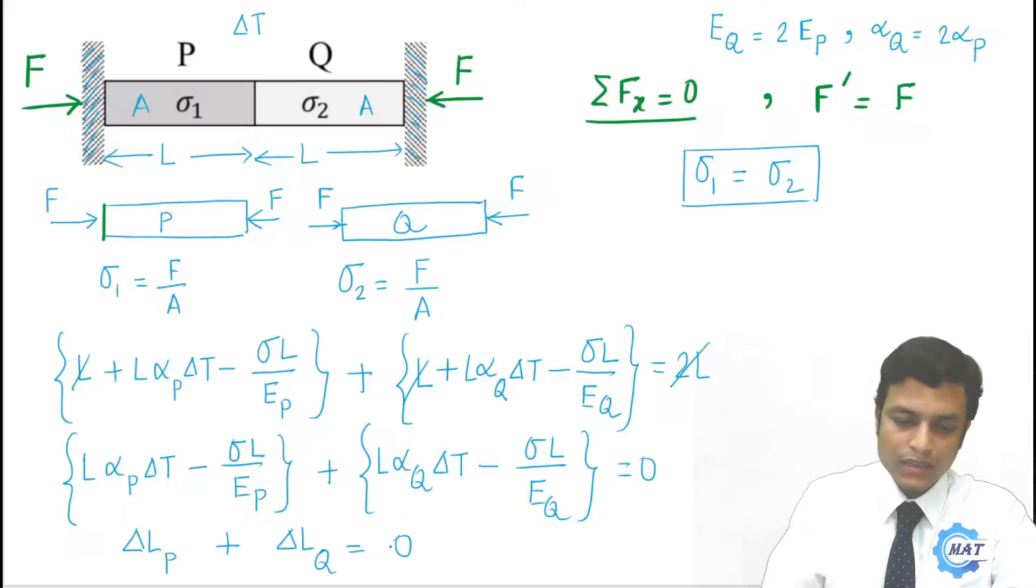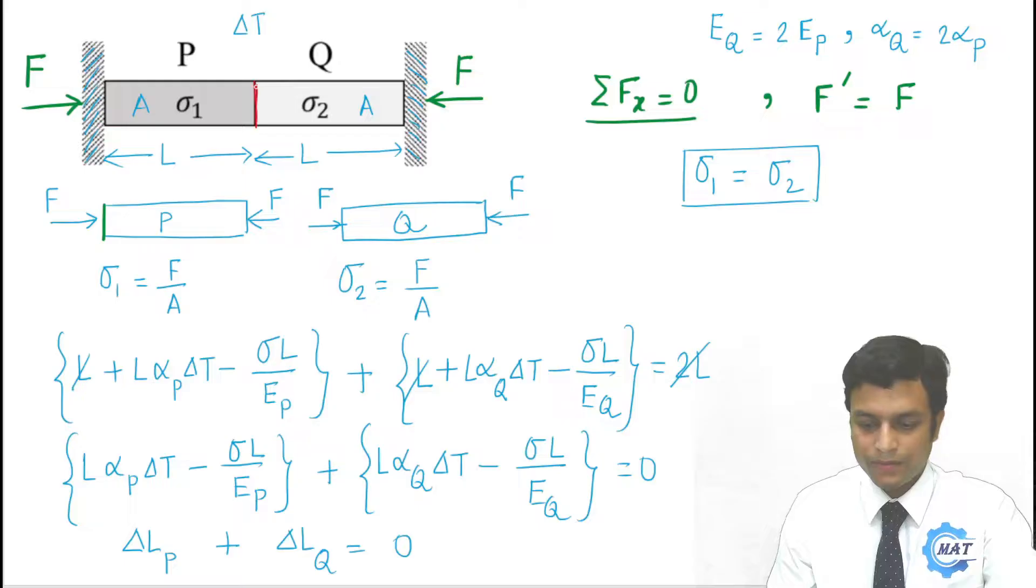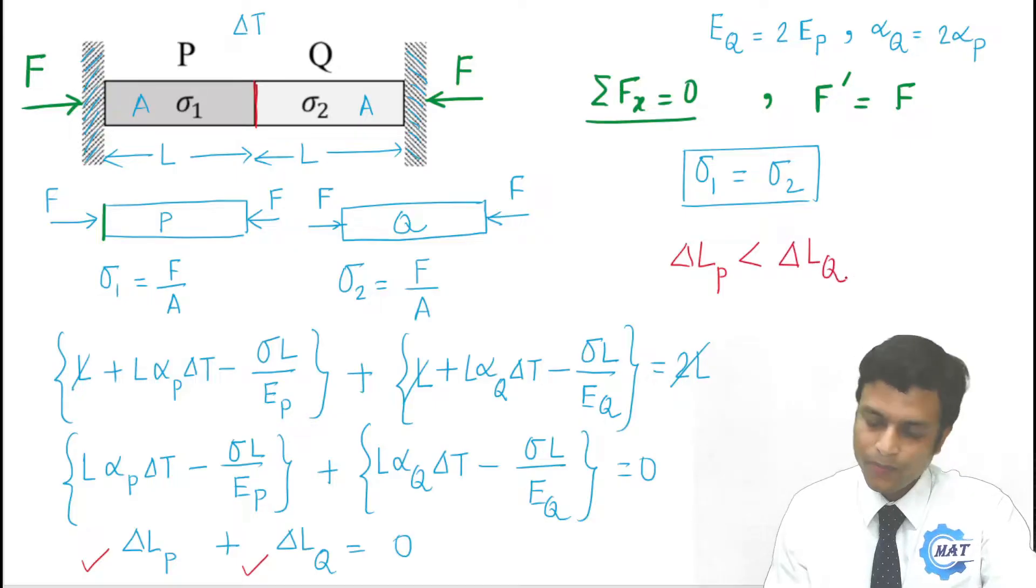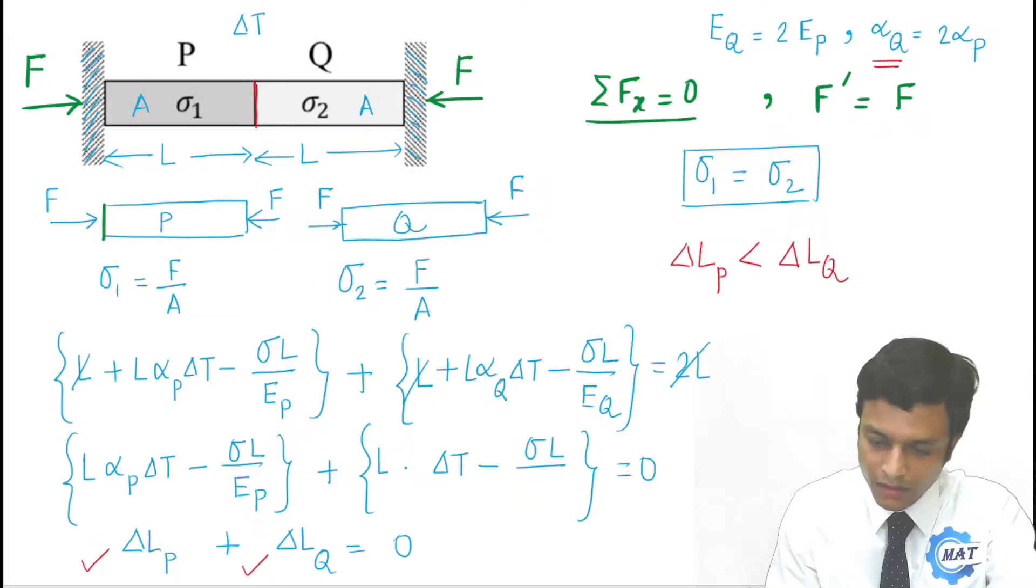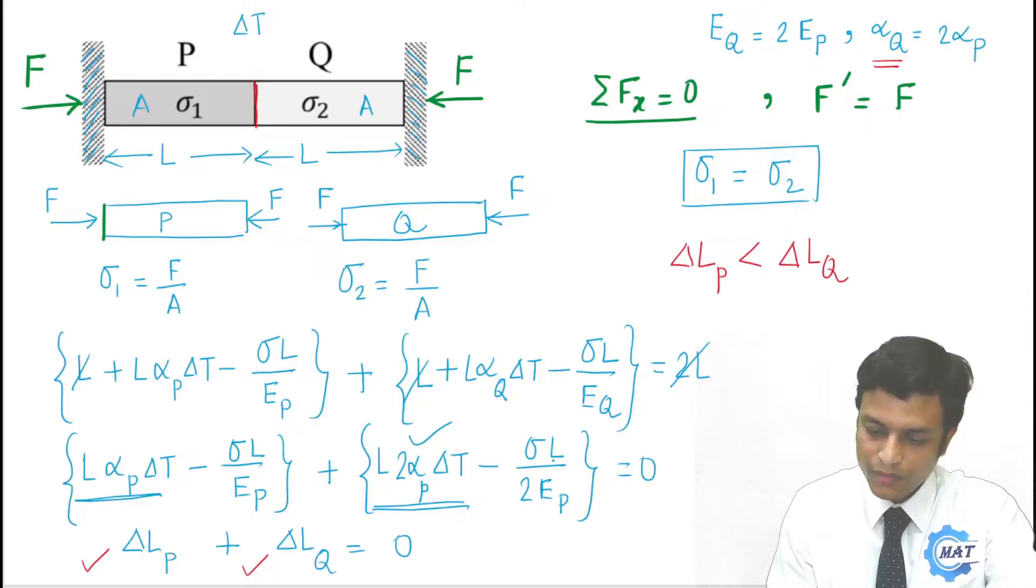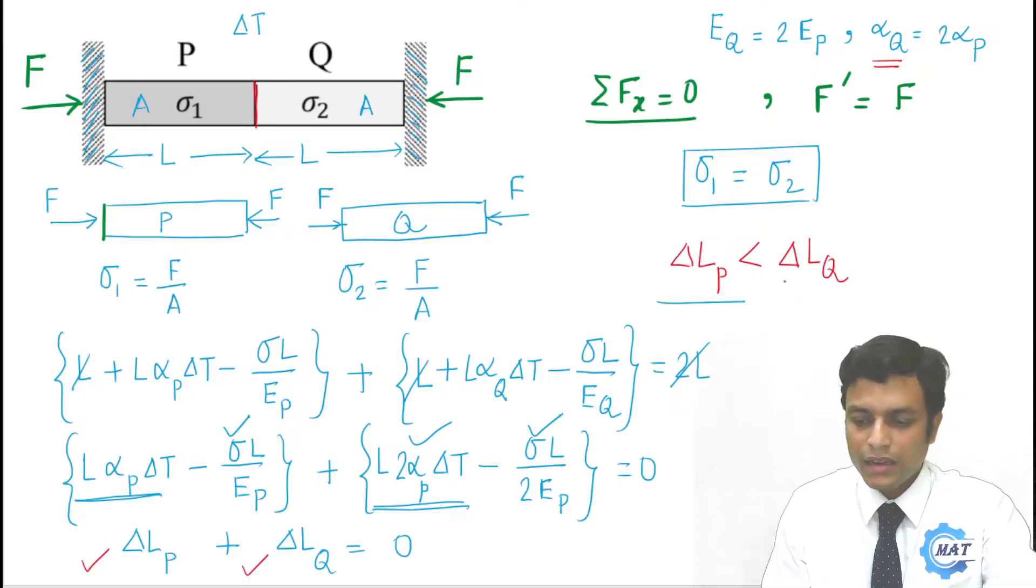But here we have to calculate that this interface will move in which direction. From change in length of P and change in length of Q, these are two expressions, we can easily understand that delta LP is less than delta LQ. Why? Because alphaQ is 2 alphaP. If we replace this alphaQ by alphaP, here 2 alphaP and 2 EP. That is, this positive term here is more than this, and this negative term is less compared to this negative term.